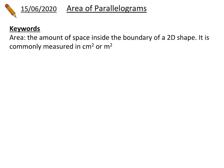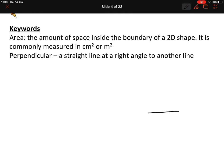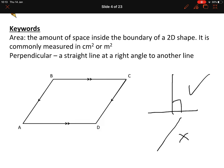Today's title is Area of Parallelograms. Key words: area is the amount of space inside the boundary of a 2D shape. Perpendicular is important — it means two lines that meet at right angles. A slanted line is not perpendicular. Now let's look at the properties of a parallelogram.